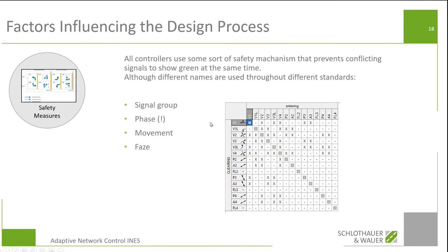Safety measures: all controllers use some sort of safety mechanism that prevents conflicting signals from showing green at the same time — that is something we find all over the world, although the names used differ slightly. In the OCIT world, the smallest element for which we find conflicts is a signal group. In NTCIP, it's a phase or a movement — the movement is the smallest possible element, but a phase can also be a movement. Sometimes it's just called a phase.